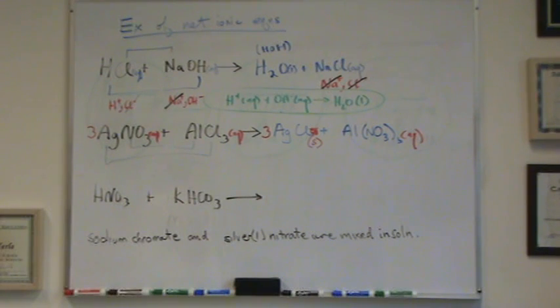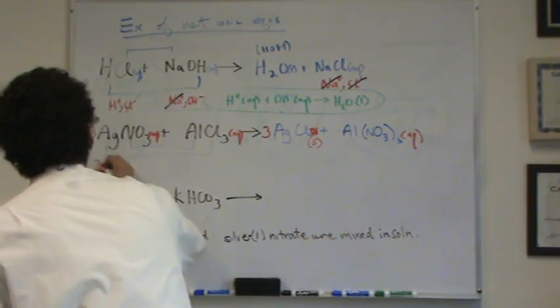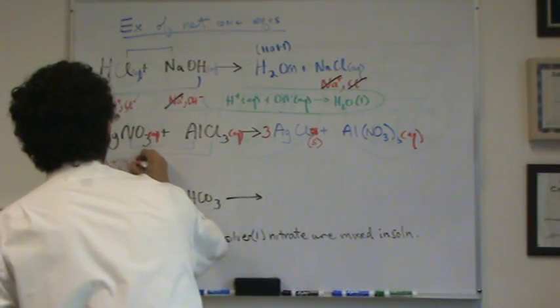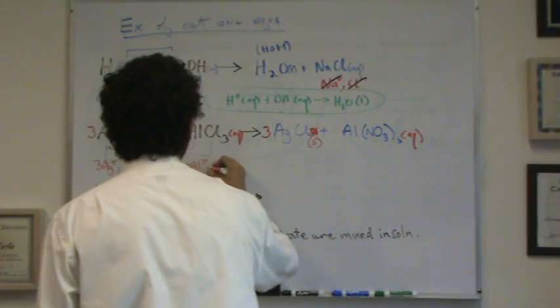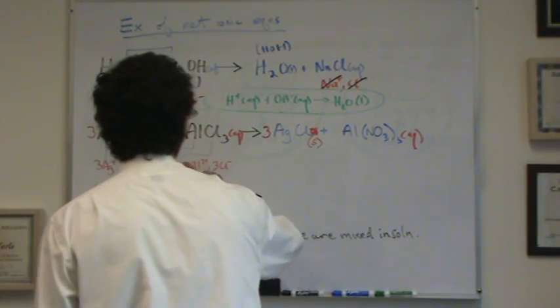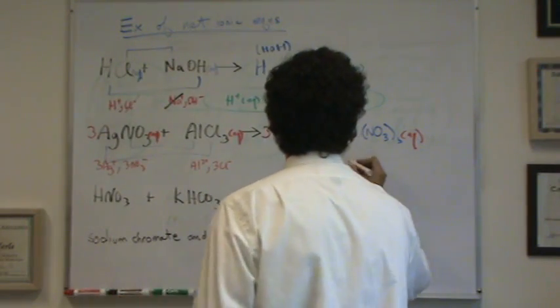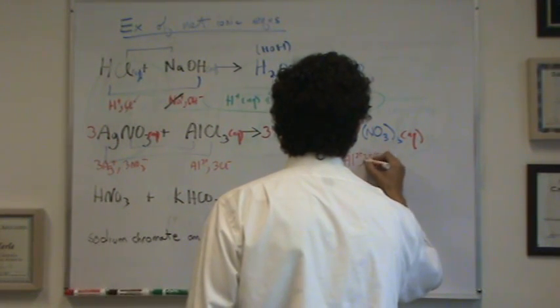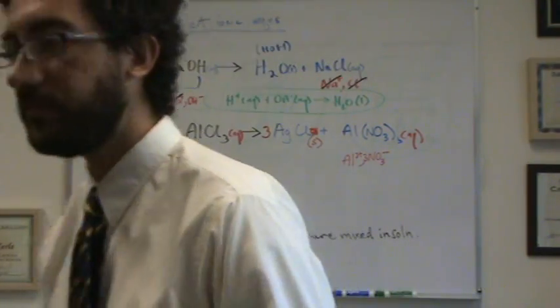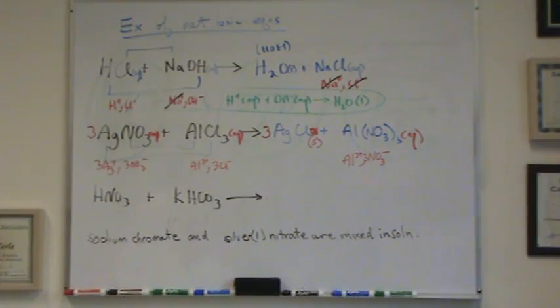Now I'm going to break up all my aqueous, which are strong electrolytes. So I've got three silver pluses. I've got three nitrates. I've got one aluminum three plus. I've got three chlorines. I've got aluminum three plus here, and three nitrate minuses there. So notice everything that was aqueous, I split up into ions. I don't do that for the solids, because solids, liquids, and gases. Anything that's not aqueous is not a good electrolyte. It doesn't split up in solution.